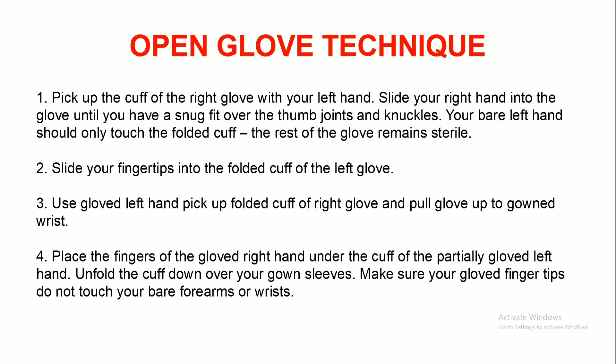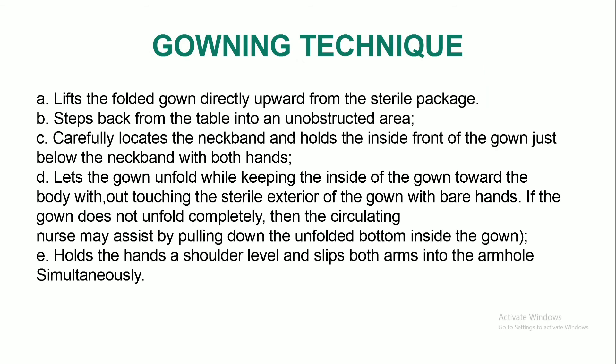For the gowning technique: lift the folded gown directly upward from the sterile package and step back from the table into an unobstructed area. Carefully locate the neck band and hold the inside front of the gown just below the neck band with both hands. Let the gown unfold while keeping the inside of the gown towards the body without touching the sterile exterior of the gown with bare hands. If the gown does not unfold completely, the circulating nurse may assist by pulling it down or knotting the gown. Hold the hands at shoulder level and slip both arms into the armholes simultaneously.